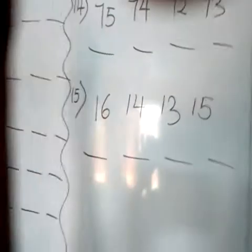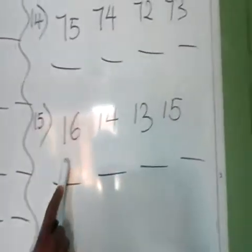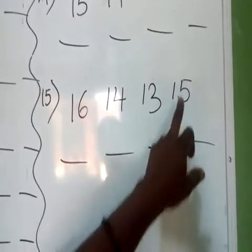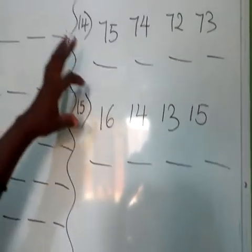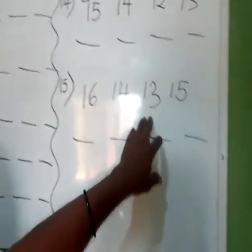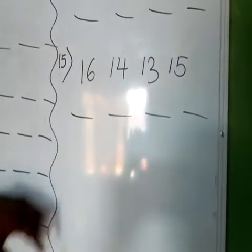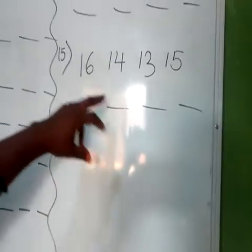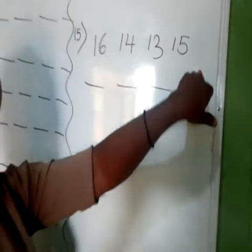Number 15 says: 1 and 6 is 16, 1 and 4 is 14, 1 and 3 is 13, followed by 1 and 5 is 15. The first number is 13. Write it down as your first answer: 1 and 3 is 13, 1 and 4 is 14, 1 and 5 is 15, then followed by 1 and 6 is 16. Thank you, see you next week.